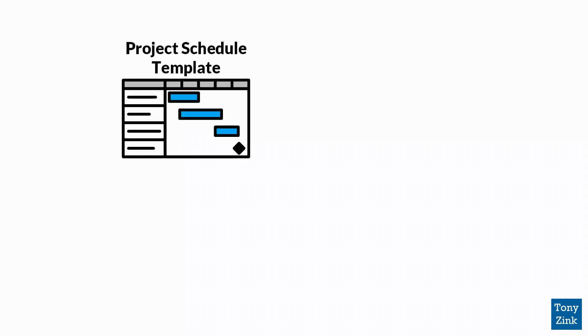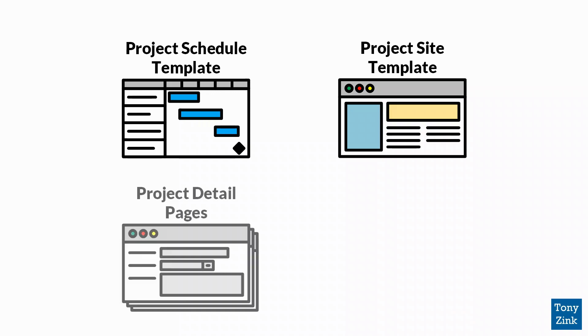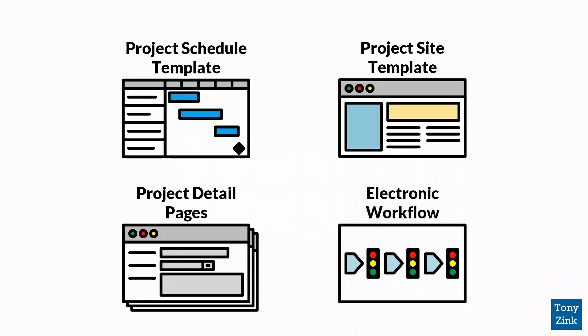Although an Enterprise Project Type doesn't need to have all these components, it can include things like a Project Schedule or Project Plan template for detailing out the project's main deliverables, activities, and timeline; a Project Site template to give your team members a place to keep track of documents, issues, and risks; a series of forms or project detail pages to track important project attributes; and a process template, otherwise known as an electronic workflow, for automating and controlling the overall management of a project.